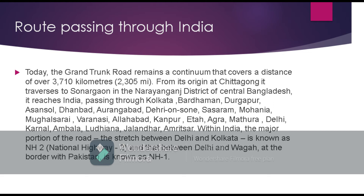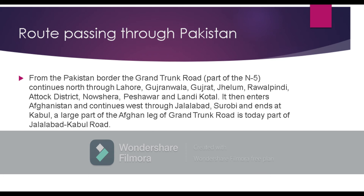The stretch between Delhi and Wagah, at the border of Pakistan, is known as National Highway 1. Past the Pakistan border, the Grand Trunk Road continues north through Lahore, Gujarat, Jhelum, Rawalpindi, Nowshera, and Peshawar. It then enters Afghanistan and continues west through Jalalabad, Sorubi, and into Kabul. A large part of the Afghan section of the Grand Trunk Road is today part of the Jalalabad-Kabul Road.